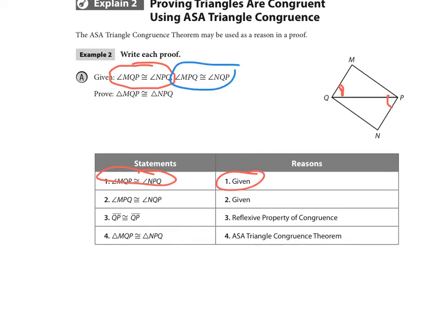The next one says that angle MPQ, so that would be this one, is congruent to angle NQP. And we write it in our chart as given. Next, it is telling you that segment QP is congruent to segment QP. And that's because of the reflexive property.